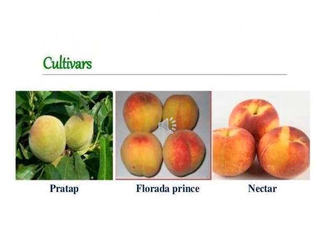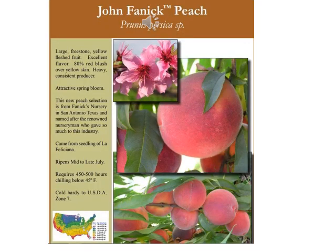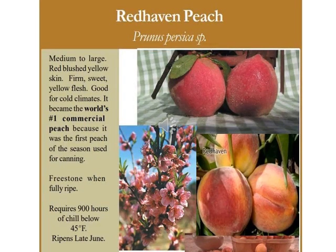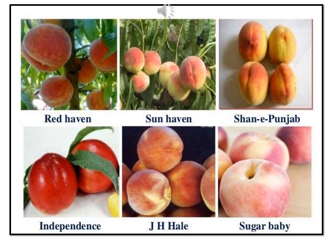Here are some other cultivars of peach. J.H. Hale peach is Prunus persica species and its characters are discussed on the left side of your screen. Here is another peach, the John Fennix peach, whose characters are also discussed in the slide. Here is the Red Heaven peach, whose main character is that it became the first commercial peach because it was the first peach of the season used for canning. This is June Gold peach and its characteristics are presented.